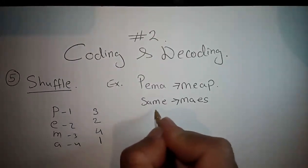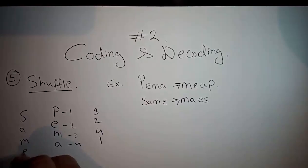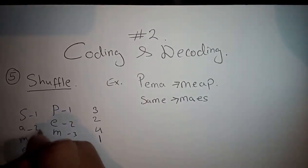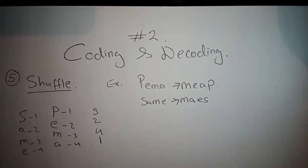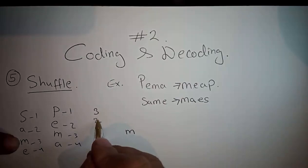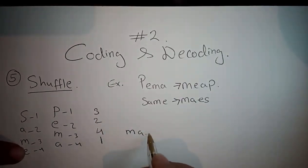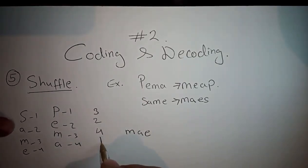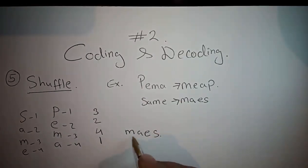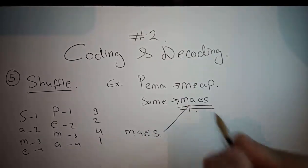In this case SAME is written S, A, M, E - one, two, three, four. Following the pattern three, two, four, one: three is M, two is A, four is E, one is S. So the answer is M, A, E, S.